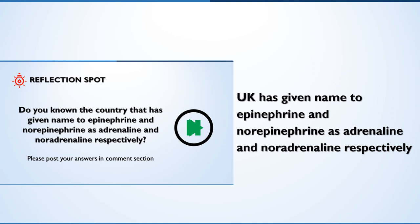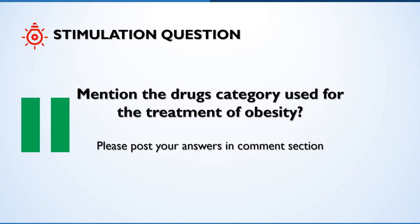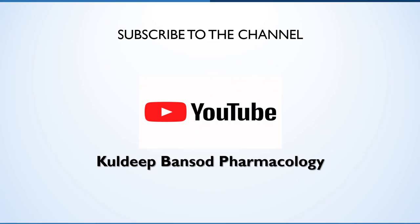Now, the answer to the first question: the country that gave the names adrenaline and noradrenaline to epinephrine and norepinephrine is the UK. Here is the next question: mention the drug categories used for the treatment of obesity. Please post your answers in the comment section. In our next video, we will discuss autonomic innervation, some exceptions and rules. Till then, happy learning. If you like the video, please subscribe to the channel.